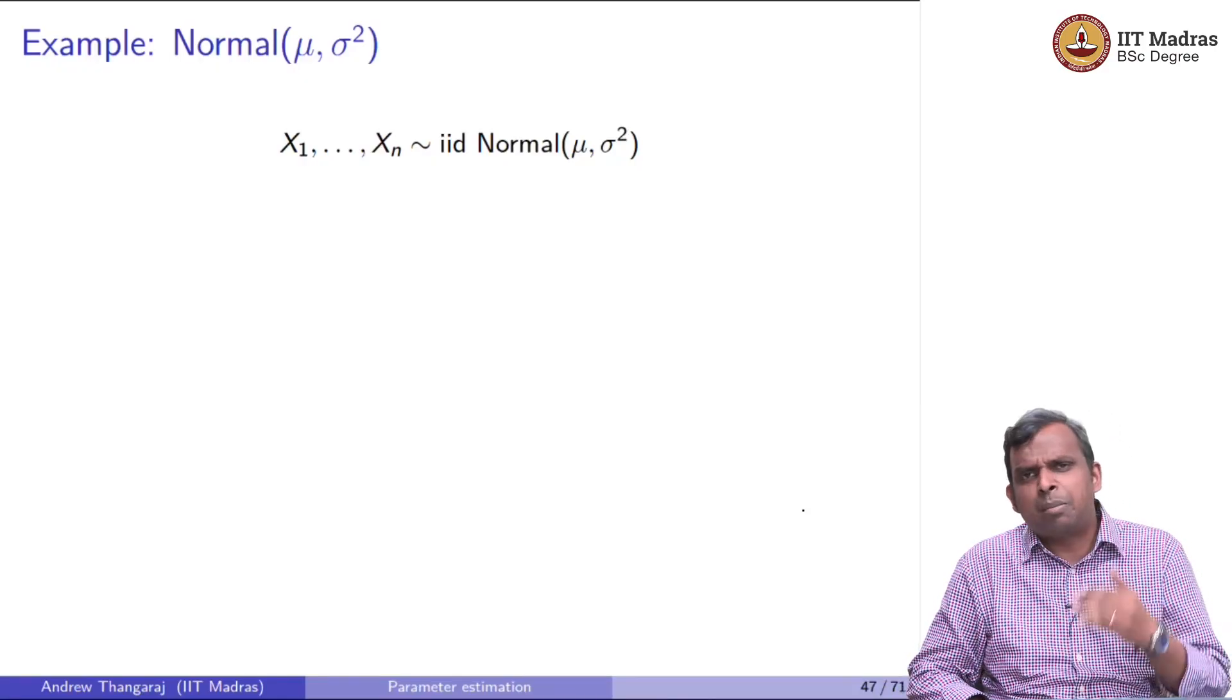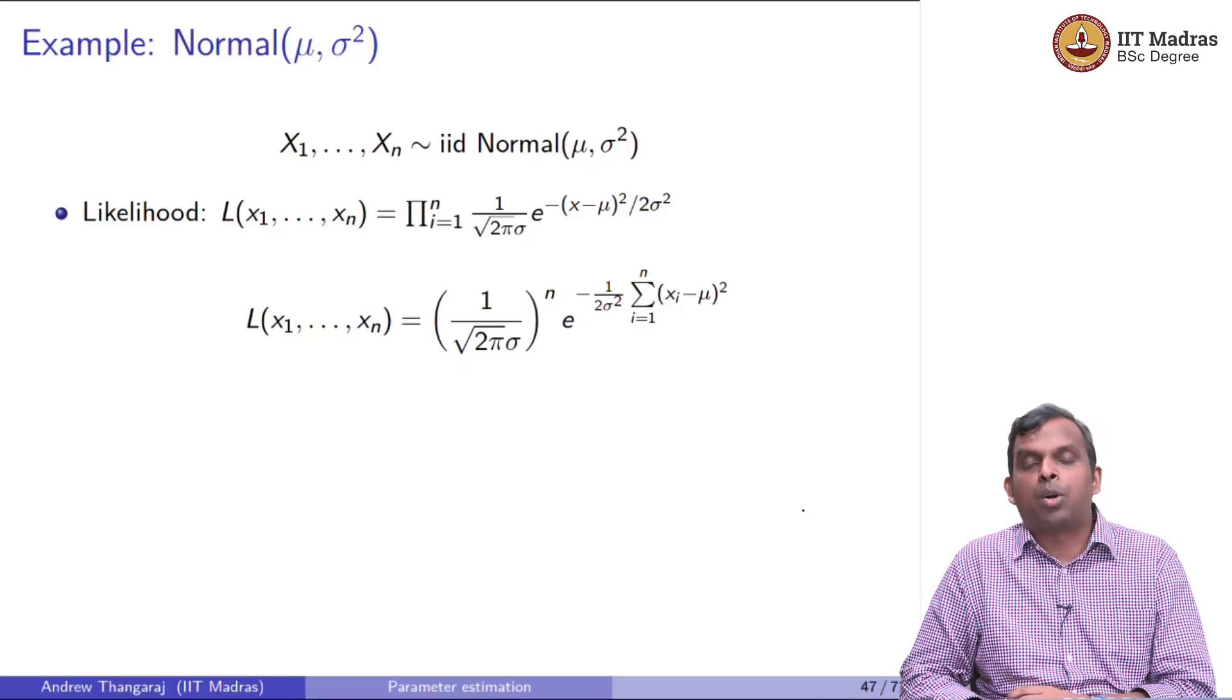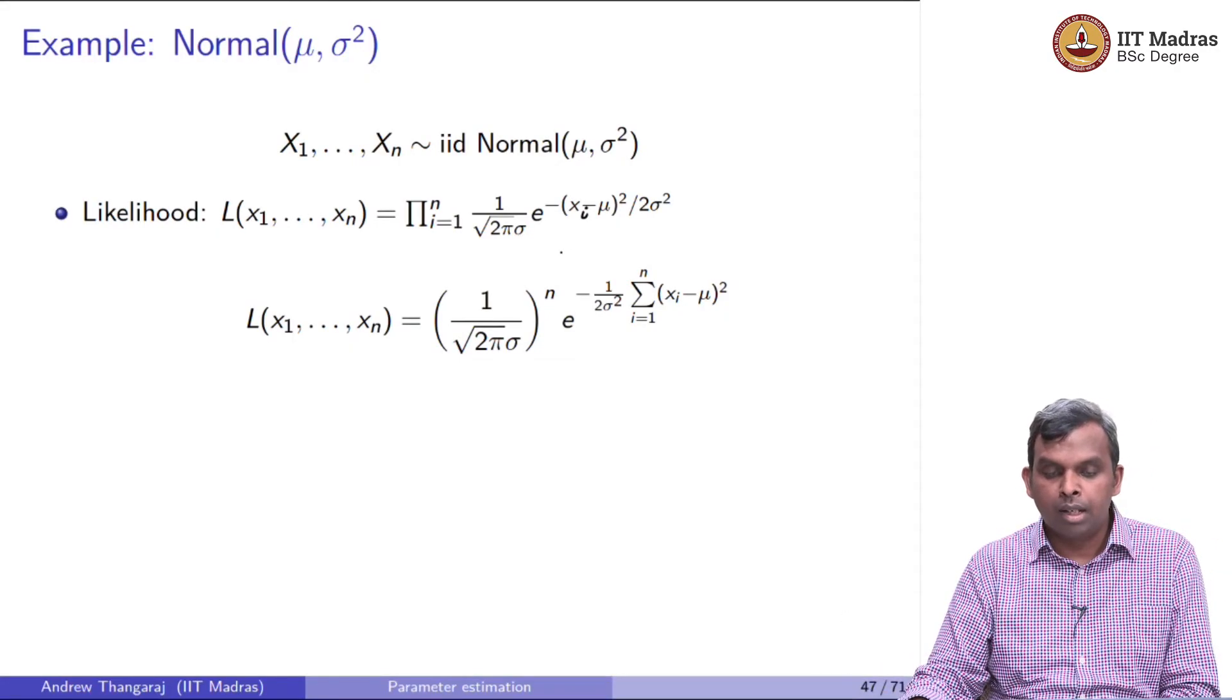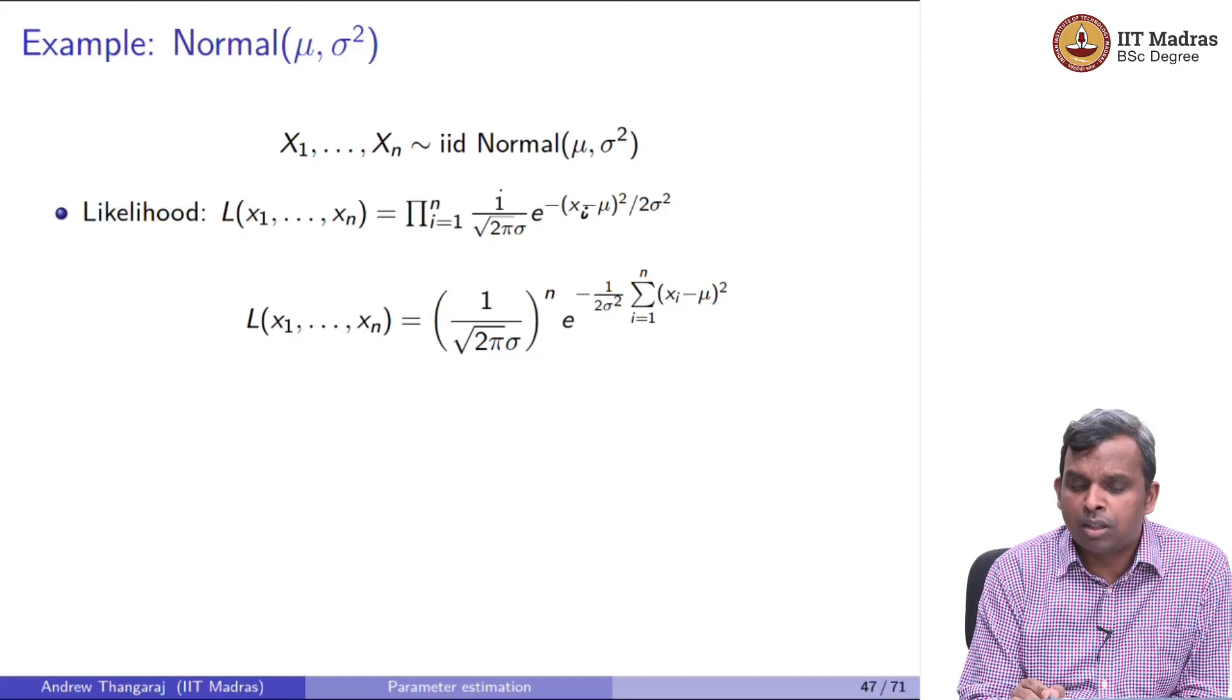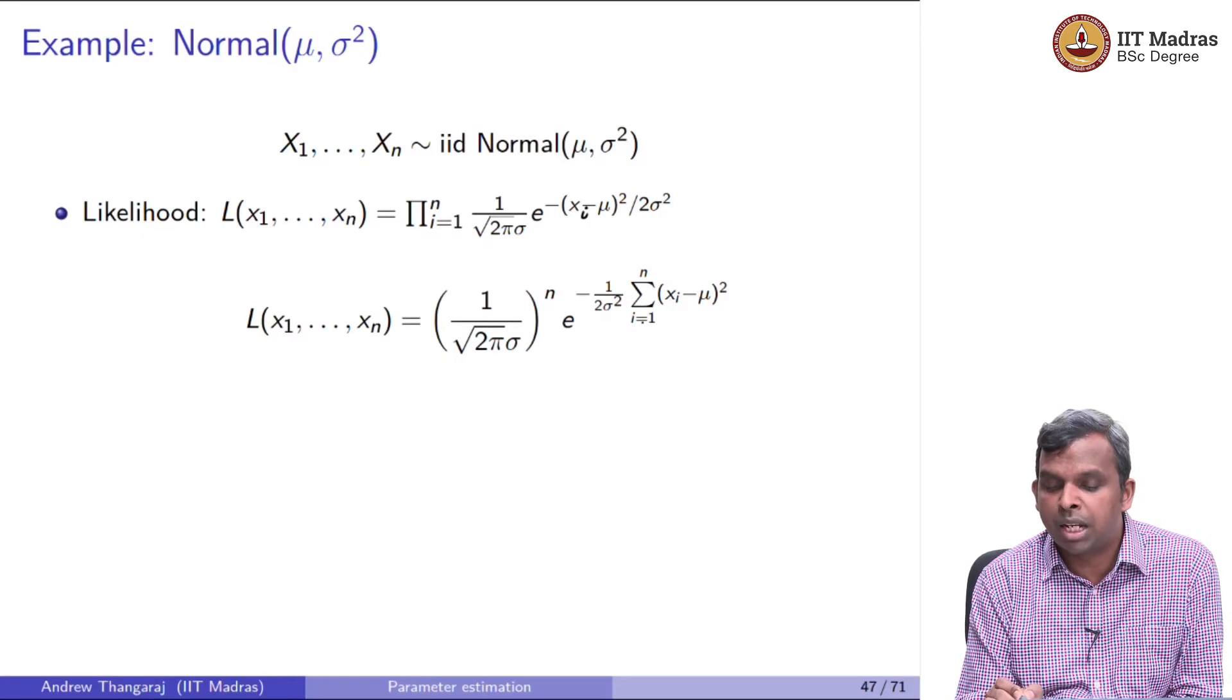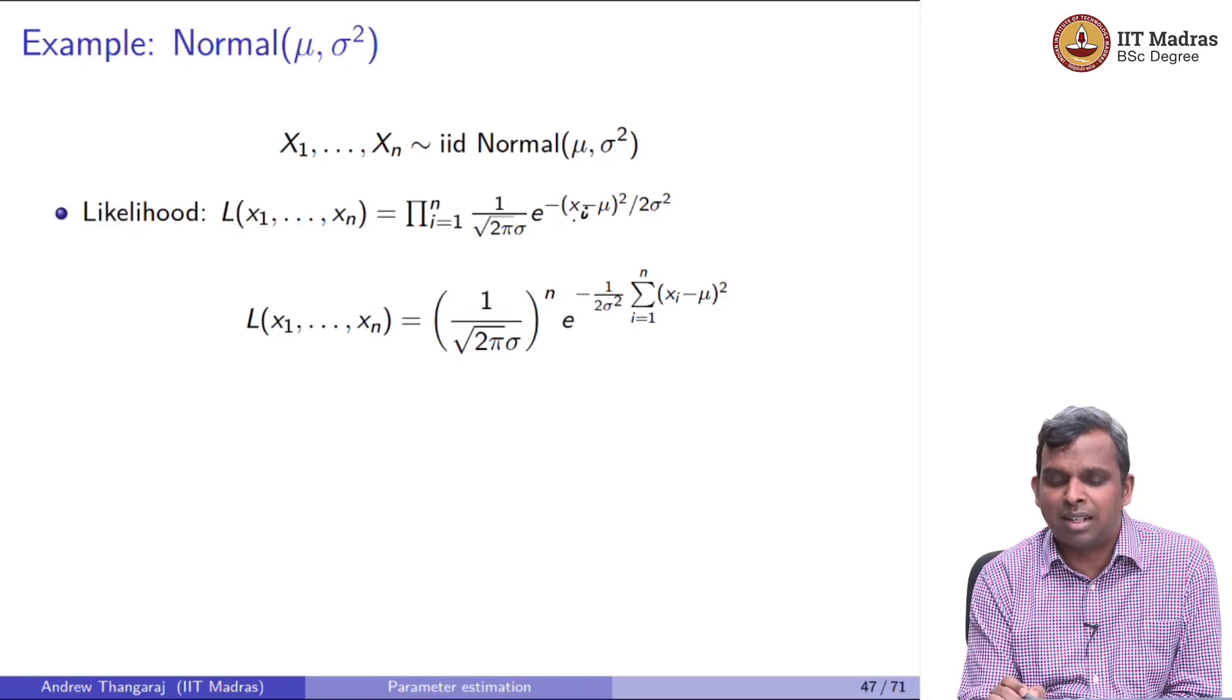Again, the recipe is exactly the same. I am not going to deviate from the recipe at all. The exact same recipe, every single time. The likelihood is the product of the density function of the normal distribution evaluated at every sample. I forgot to put the xi here, it is very, very important. Now notice the simplification here. I have done a little bit of simplification. I have grouped all this 1 by √(2πσ) together and raised it to the power n. And then e^(-) multiplying, I have just grouped all of those guys together and put -1/(2σ²) summation i equals 1 to n (xi - μ)².